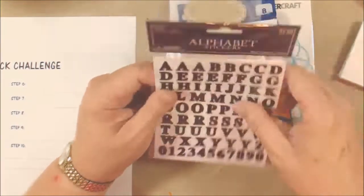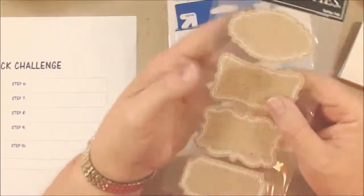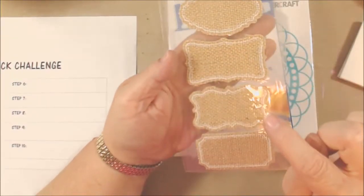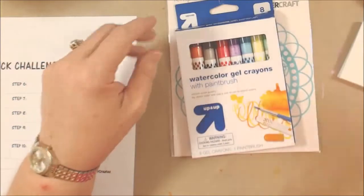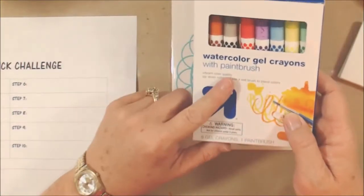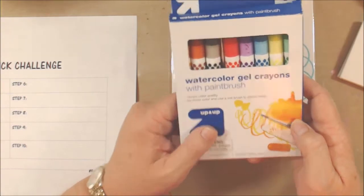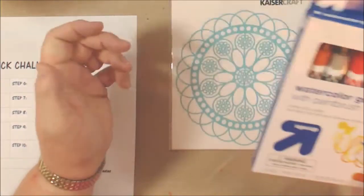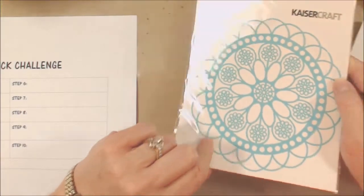Some alphabet stickers, and these are really cool—these are stickers but they're burlap, which I thought was kind of cool. You could paint them or do whatever to them. I have some watercolor gel crayons which I'm hoping are kind of like gelatos. They kind of look like they're gelatos.